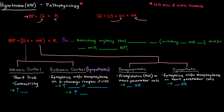In order to understand the pathophysiology of hypertension, we need to think about how blood pressure is related to cardiac output, represented by Q, and peripheral resistance. If we have greater peripheral resistance and/or greater cardiac output, we have a higher blood pressure.